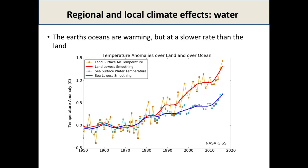We can also see this in climate change data. Reports of a supposed pause in global warming were addressed by NASA data showing this is primarily related to a reduced heating rate in the oceans compared to land. If we look at temperature anomalies over time, the land temperature in red is increasing much faster than the water temperature. The water temperature is also increasing — it just takes more heat energy to increase the temperature of water than it does to increase the temperature of land.